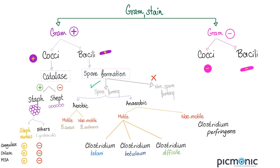Among spore-forming bacteria, we have aerobic and anaerobic. The anaerobic are further subdivided into motile and non-motile. Motile ones are Clostridium tetani, Clostridium botulinum, and Clostridium difficile. The non-motile one is Clostridium perfringens. These are the four bacteria we will discuss today.